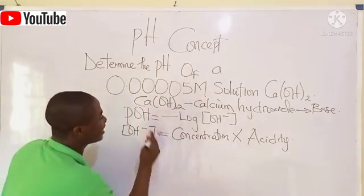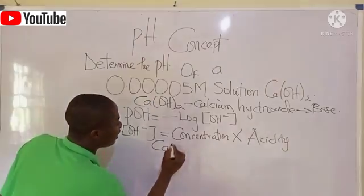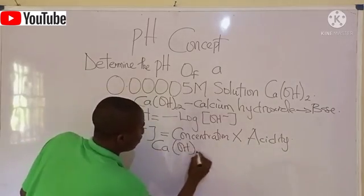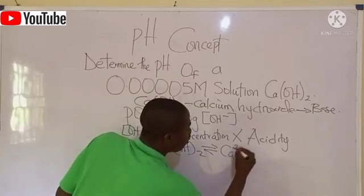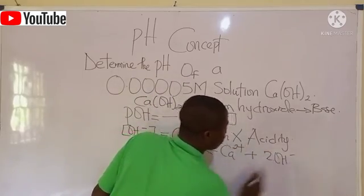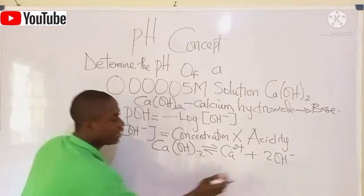Now, in this context, you can see the compound, which is calcium hydroxide. Dissociating, you get the calcium ion plus 2OH minus. The equation is balanced.